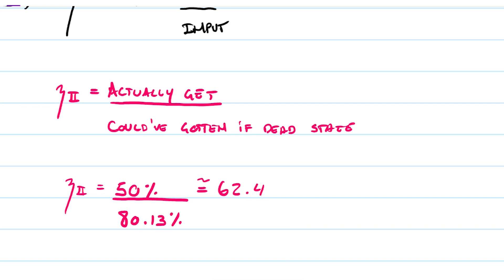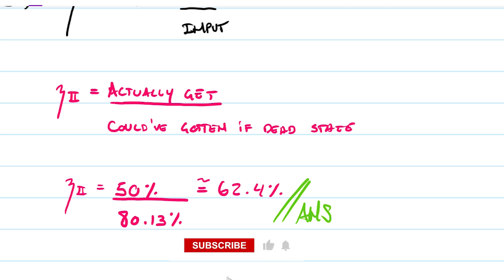So the second law efficiency is 62.4%. In other words, if we could go all the way to the dead state we'd achieve 80% efficiency, but since we're achieving 50%, we're capturing 62.4% of the total possible. I hope this is clear — it's not a mathematically complicated problem, it's more about understanding the concept. Try it from scratch to see if you understand, and leave any questions in the comments below. If this video helped you, give it a like and we'll talk soon.